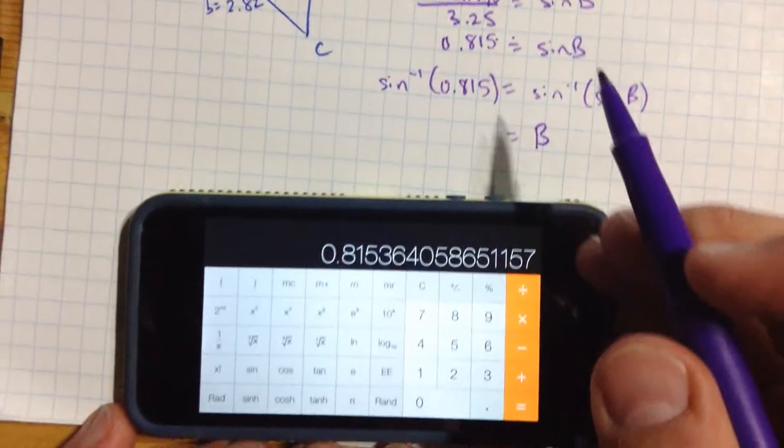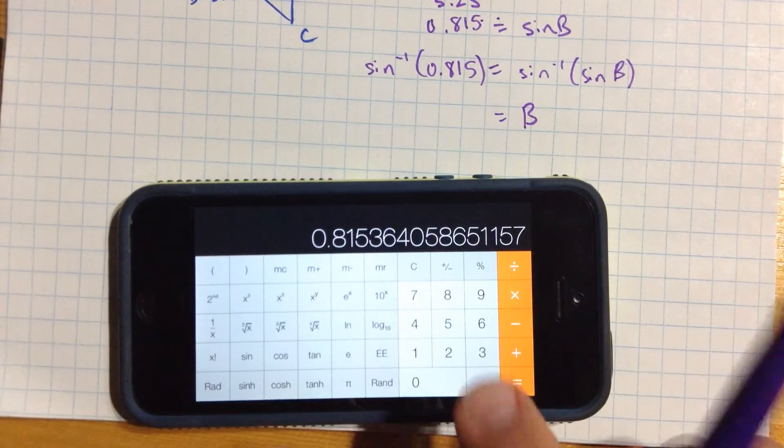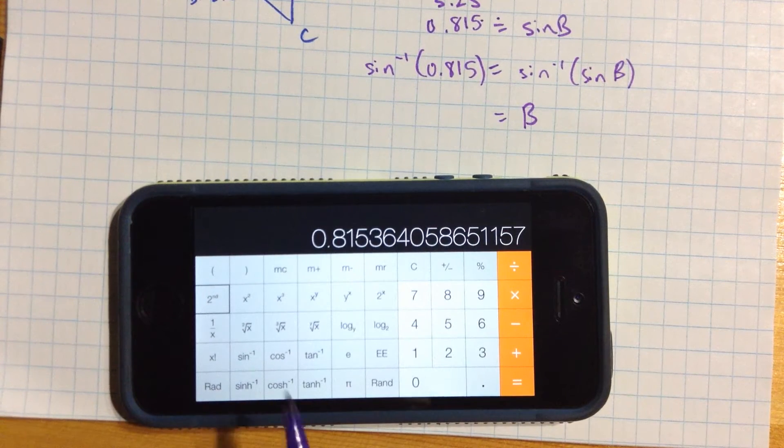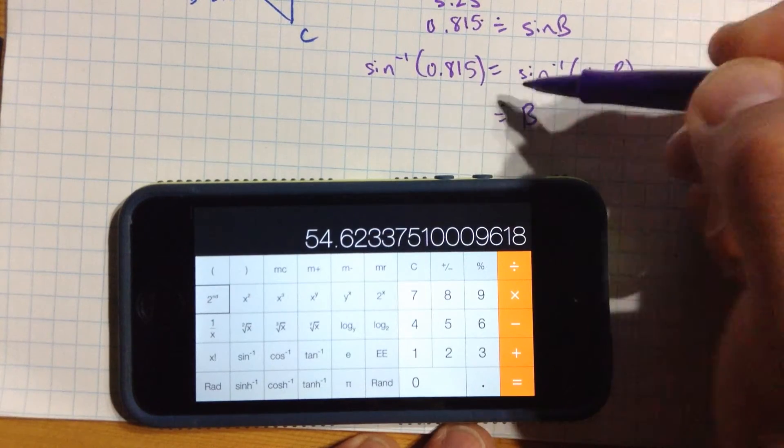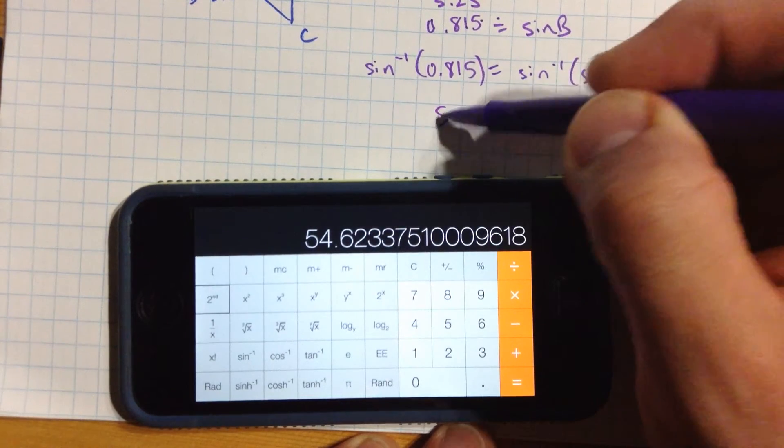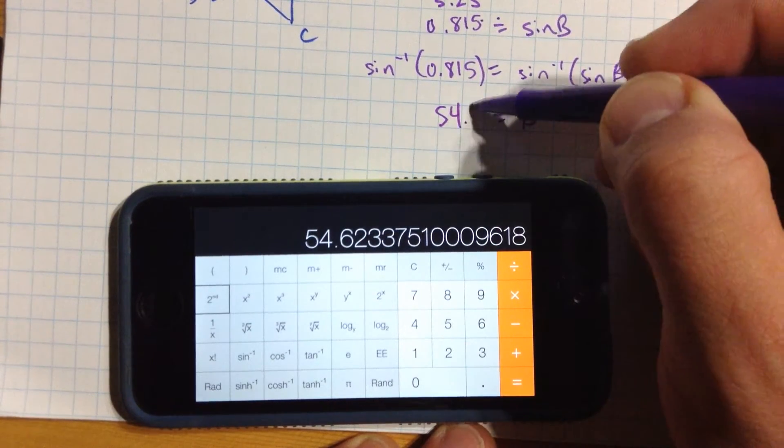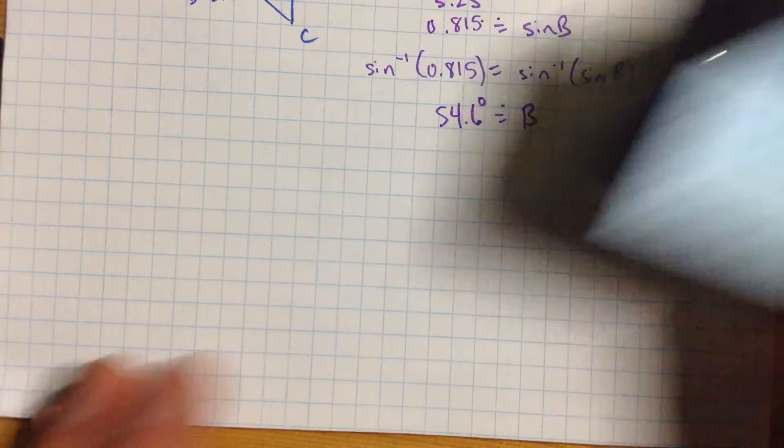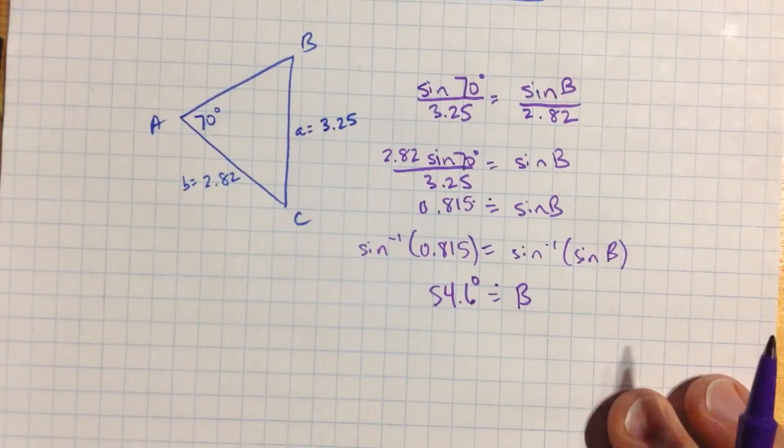So this will give us b on the calculator, sine inverse, you'll see there's no sine inverse button yet, but if I press the second function, there it is right there, sine turned into sine inverse, press that once, and you get that b is about 54.6 degrees approximately. Okay, that's good.